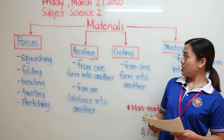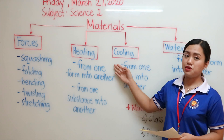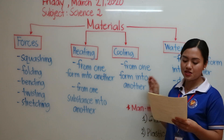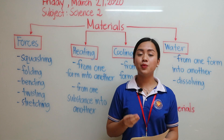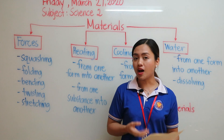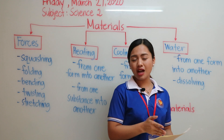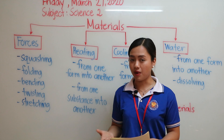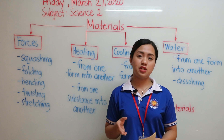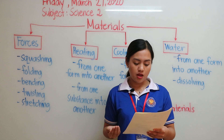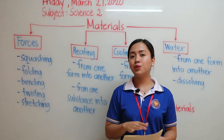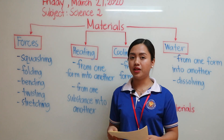Materials can also change through cooling — from one form into another. For example, water: if we put it in the fridge, it turns into ice. Melted chocolate: if we put it in the fridge, it becomes a chocolate bar again. Fruit juice put in the fridge can turn into a popsicle. And a liquid jelly mixture, after we cool it down, becomes firm and wobbly.